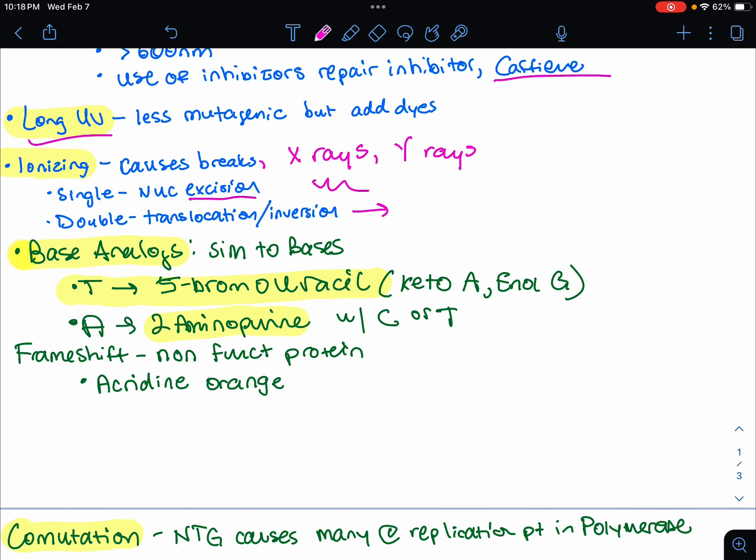Let's go to some chemical mutagens now. Base analogs are the main one that the professor wants us to focus on. They're going to affect replicating DNA. We have, usually we have thymine. They're very similar to bases. However, we could have this 5-bromouracil molecule. It's very similar to thymine, so it could actually have different binding.